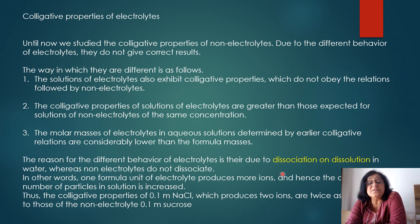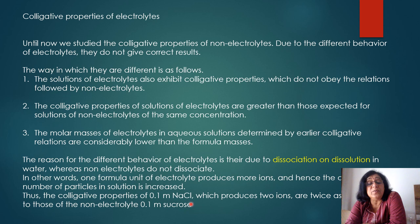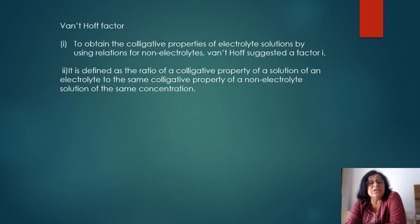The reason electrolytes behave differently is that they undergo dissociation into ions. One formula unit of an electrolyte produces more ions. For example, 0.1 m NaCl produces two ions, while 0.1 m sucrose produces no ions. So the colligative property value for NaCl is double that for sucrose. When taking electrolytes, colligative property values increase.